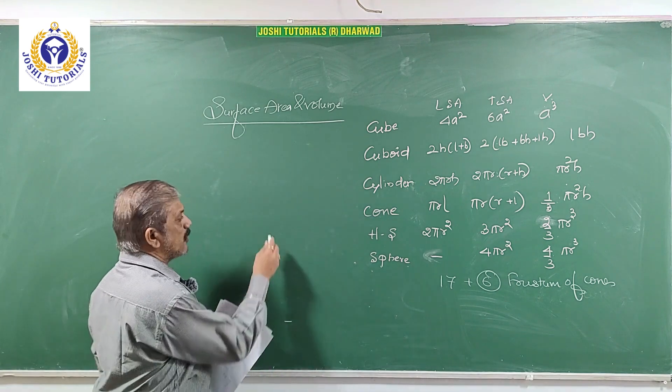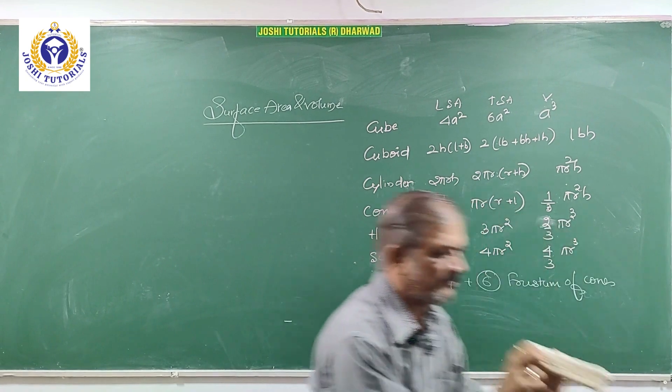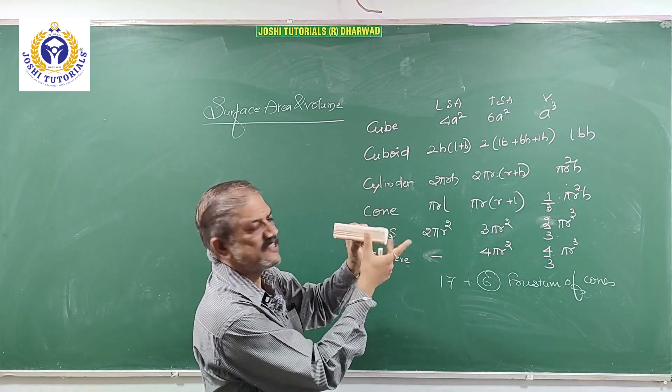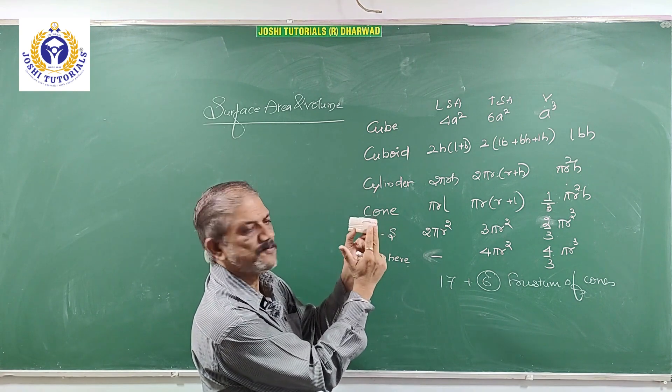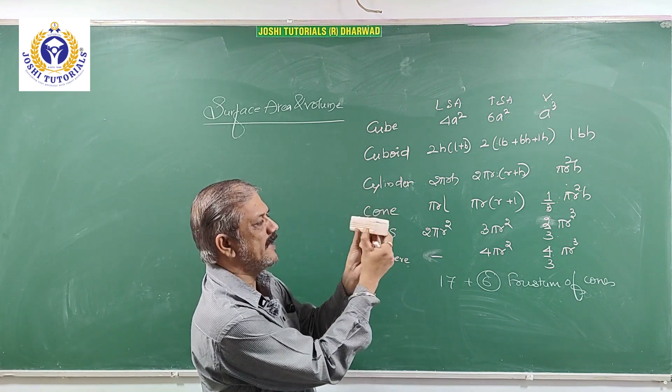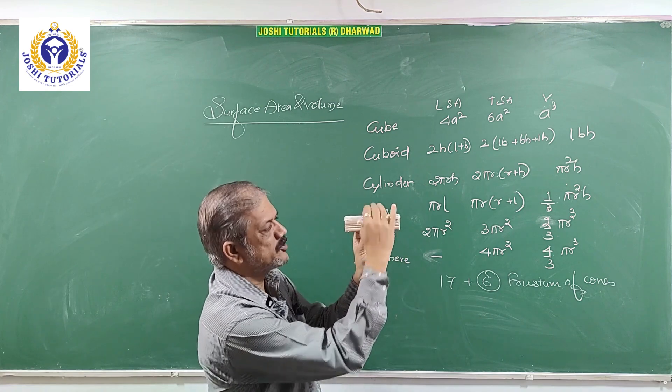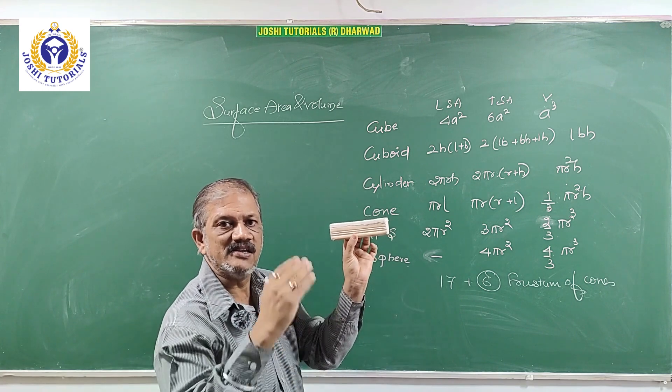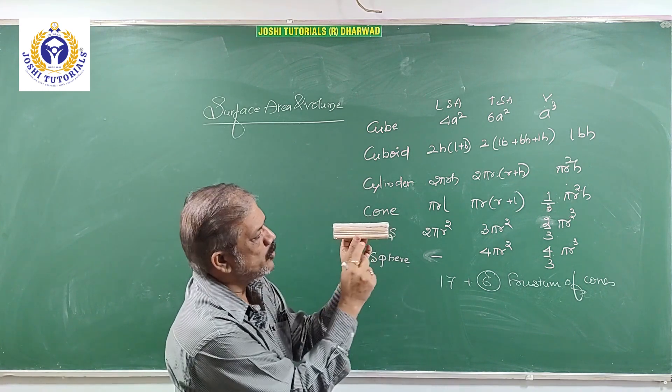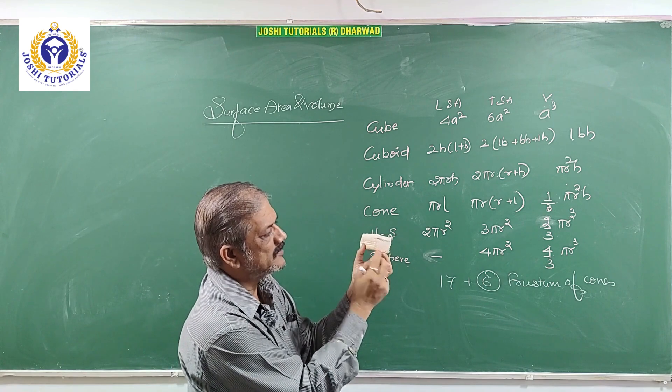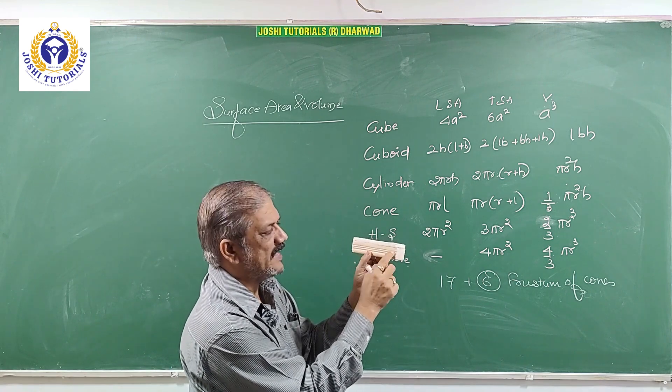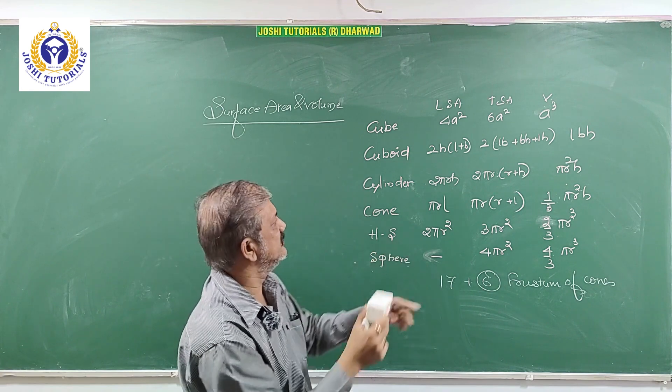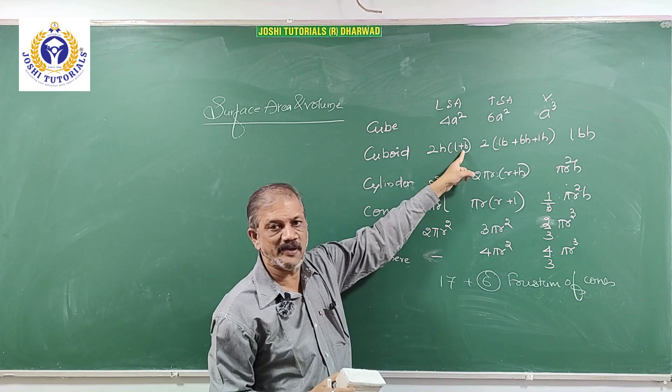For example, if you want a cube, say for example this is cuboid. Lateral surface means this part, this part, this part, which when you rotate, the part which you see except the top and the bottom, that area is called LSA, lateral surface area. You know length, breadth, height. So LH, BH, LH, BH.